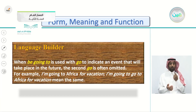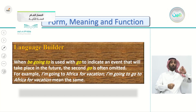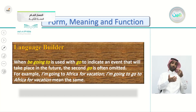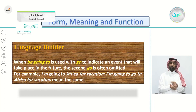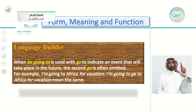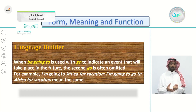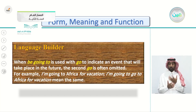Language builder: When 'be going to' is used with the verb 'go' to indicate a future event, the second 'go' is often omitted. For example, 'I'm going to go to Africa for vacation' and 'I'm going to Africa for vacation' have the same meaning. You can write or remove the second 'go' — it's up to you.